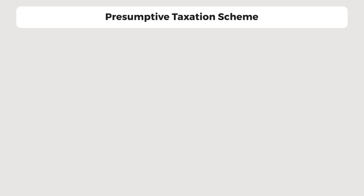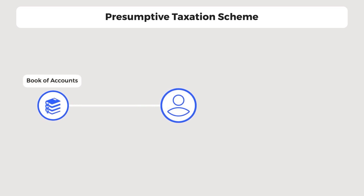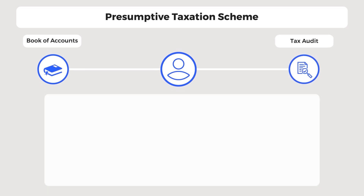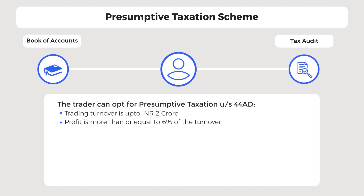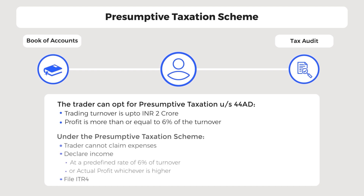The presumptive taxation scheme was introduced to give relief to small taxpayers from maintaining books of accounts and from getting their accounts audited. A trader can pay tax on income declared at a predefined rate. When the trading turnover is up to 2 crore and profit is more than or equal to 6% of the turnover, the trader has an option to opt for presumptive taxation under Section 44AD. The prescribed rate for digital transactions is 6% of turnover under Section 44AD, in which case the trader cannot claim expenses and must file ITR-4 before 31st July. If the trader opts out of the presumptive taxation scheme in future years, they cannot opt for it again for the next 5 years.